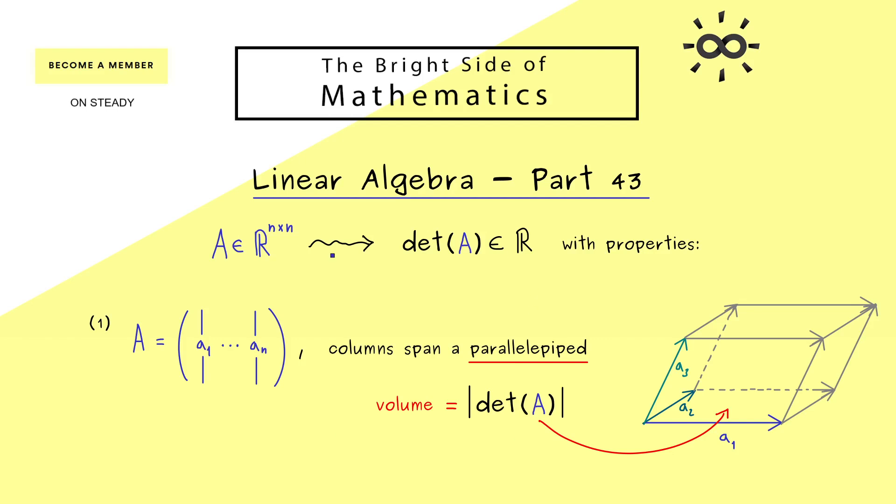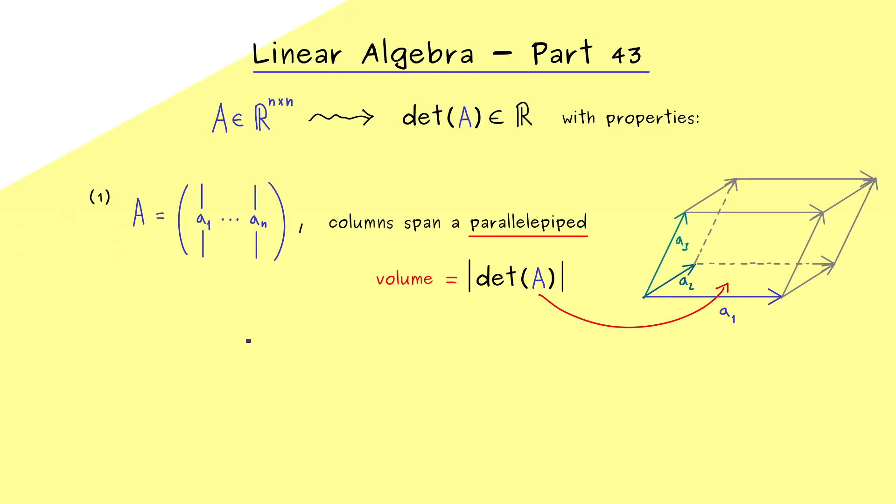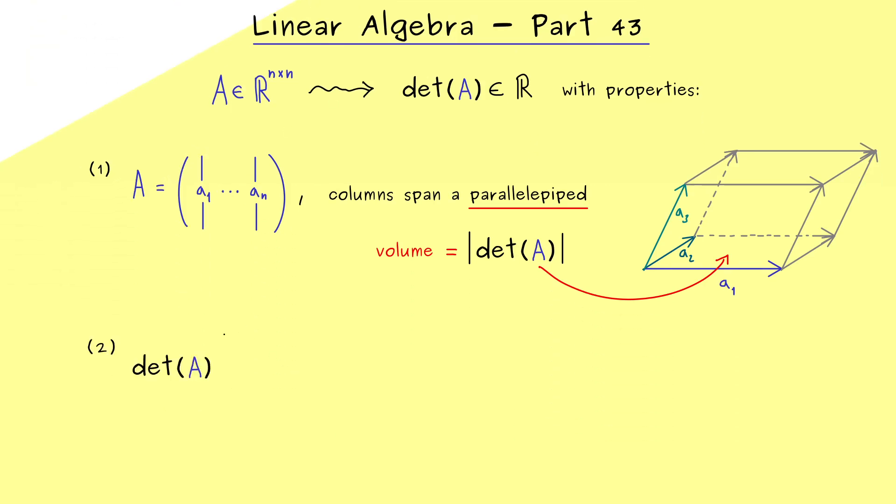Okay, having this in mind we can immediately explain the second property. This is something we want to use in the case that we know that the determinant is equal to zero. In other words, the volume the vectors span here vanishes. Hence, we can immediately draw a very important conclusion. Namely, if the determinant is zero, the column vectors here are linearly dependent. Because otherwise they would definitely span a non-vanishing volume.